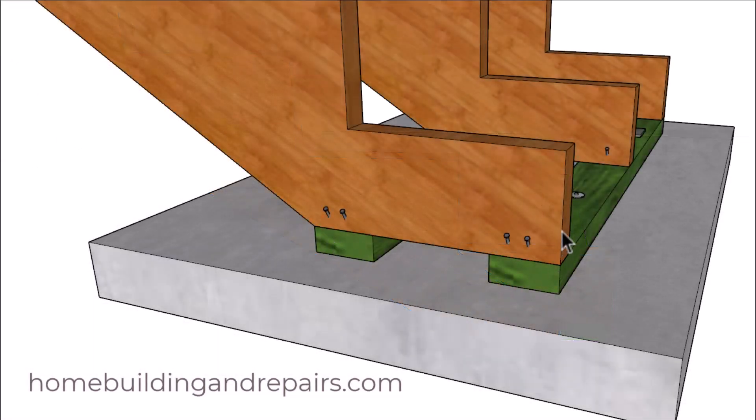So in my opinion, this is a superior assembly method that will allow the stringer to be supported in the back like a roof rafter, right?